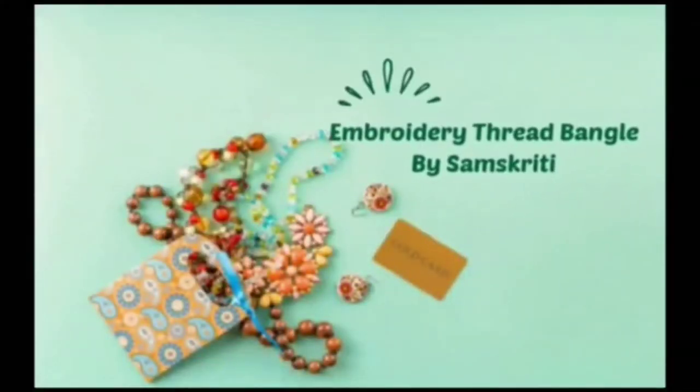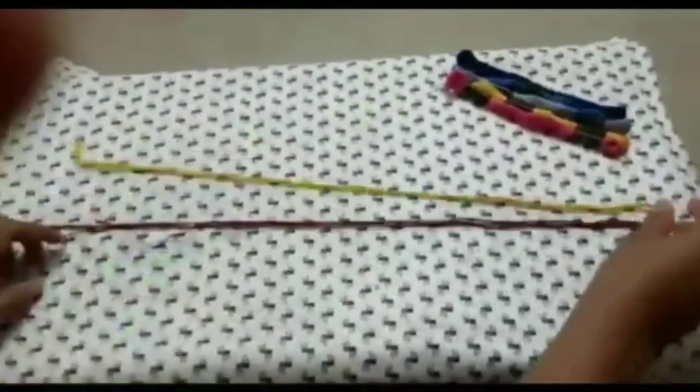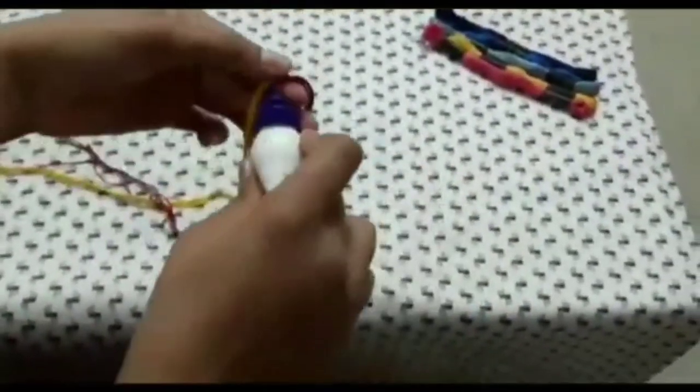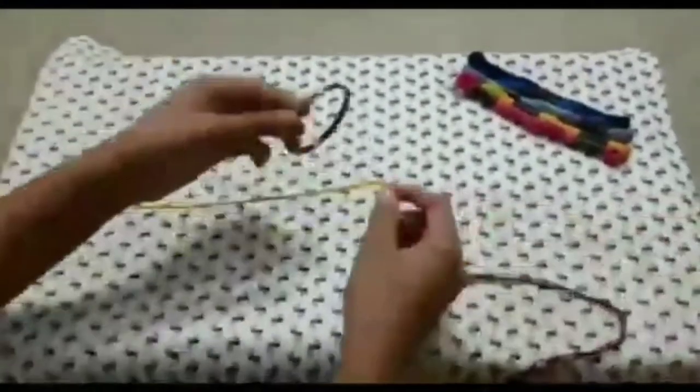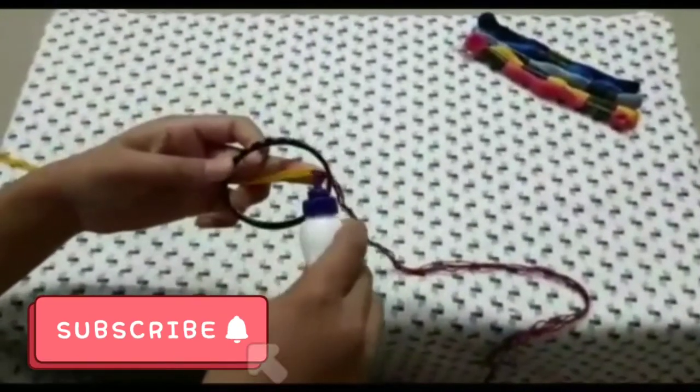Decorated embroidery thread bangle by Samskritti. Take a bangle and a pair of embroidery threads. Cut it, glue the ends of both the threads together. Now stick the glued thread to the bangle.